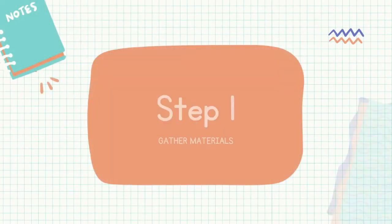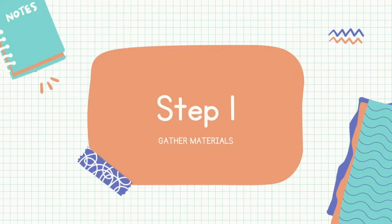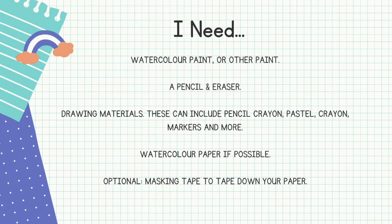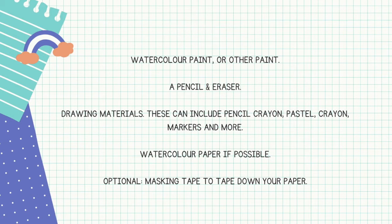The first thing you're going to want to do is gather your materials. By now you're probably familiar with what you need for watercolor painting, so pause the video here and go grab some of this other stuff: pencil and eraser, other drawing materials including pastel, crayon, pencil crayon, or markers, and if you have watercolor paper and masking tape, those are great to have as well. If you don't have watercolor paints, another kind of paint will do.